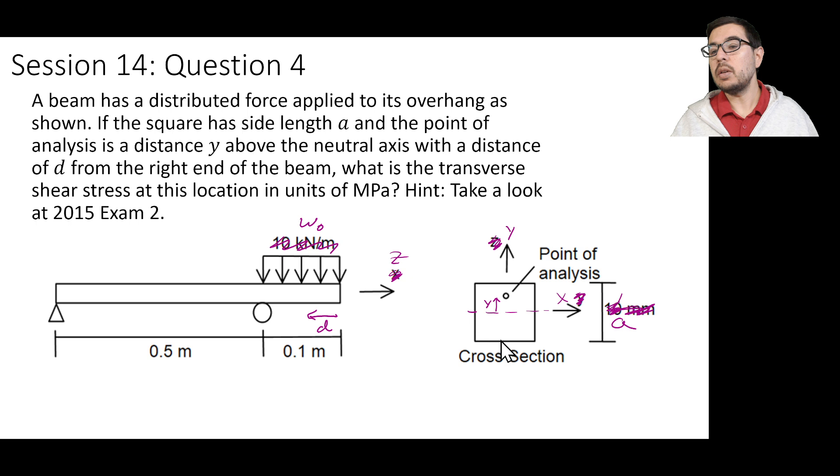The dimensions of the cross-section are a by a. It is a square, and in this overhanging region, we have an applied distributed force with magnitude w-naught.